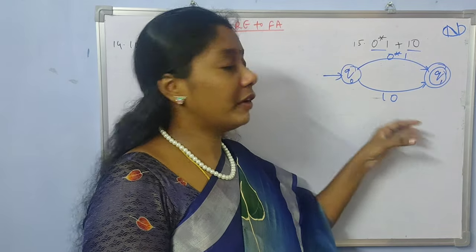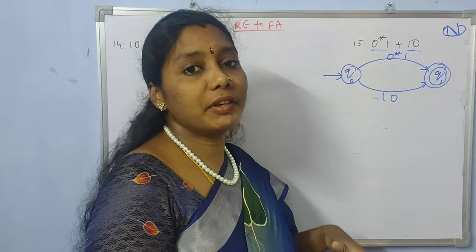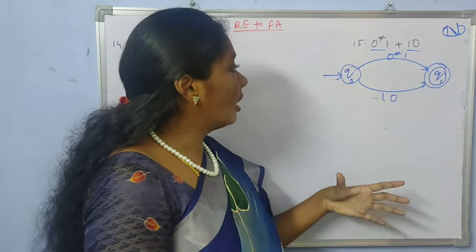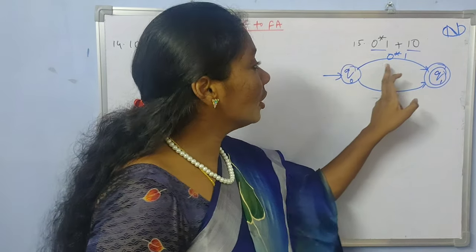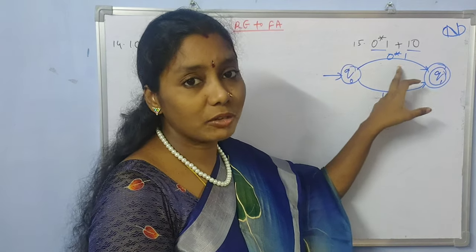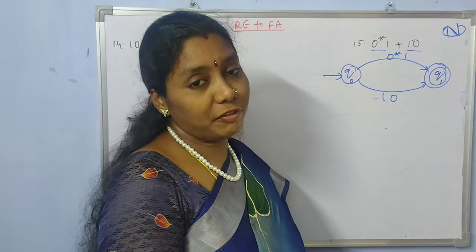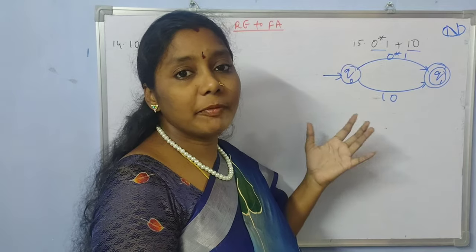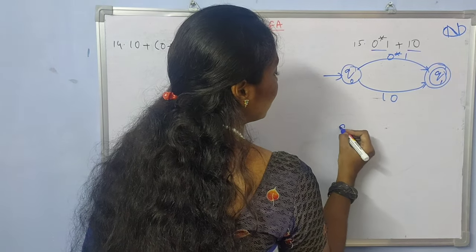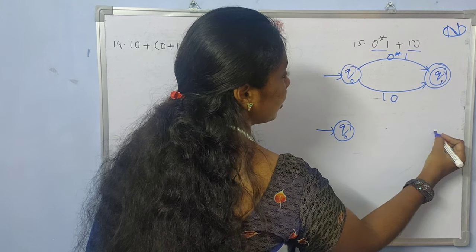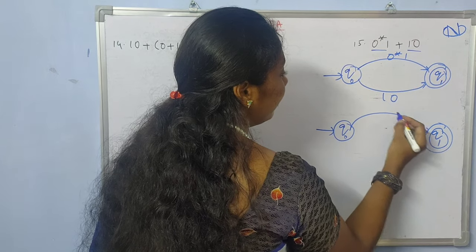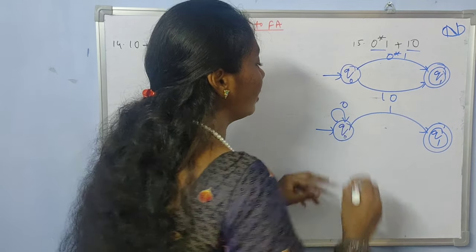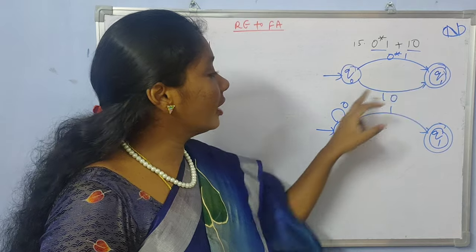After constructing this minimal finite automata, let us construct the next level by considering the individual parts of the regular expression. If you consider 0*1 — initially you should have 0* and after that you can have 1. Now 0* is a closure, and closure can be represented in finite automata with a self loop. So here I write q0 as it is and here is q1 as the final state, with 1 as the transition and a self loop on q0 for 0.